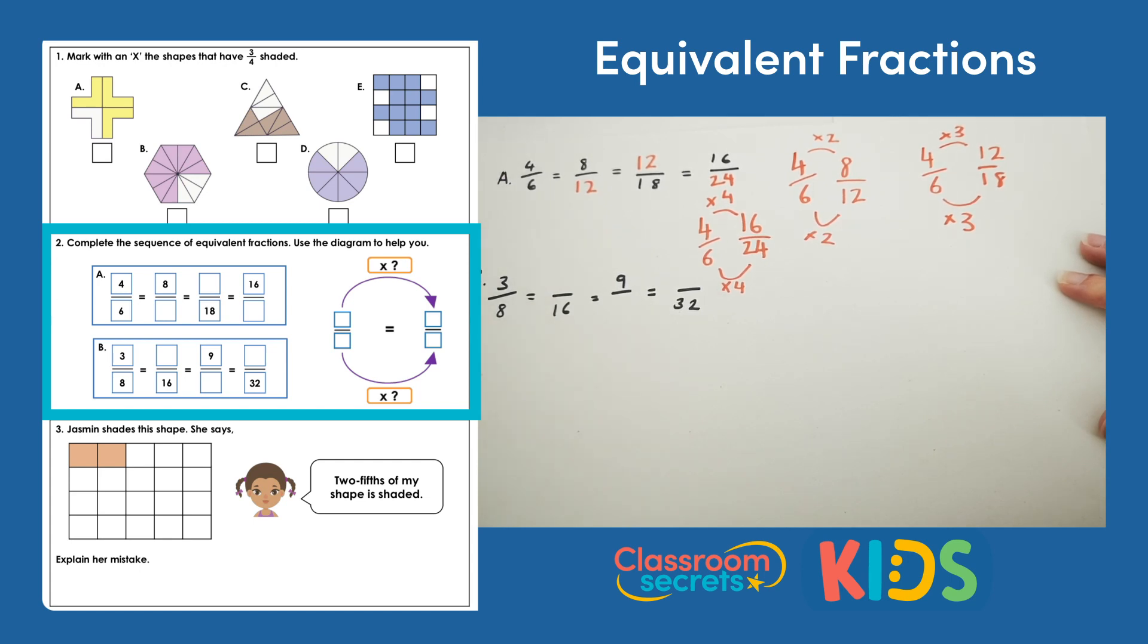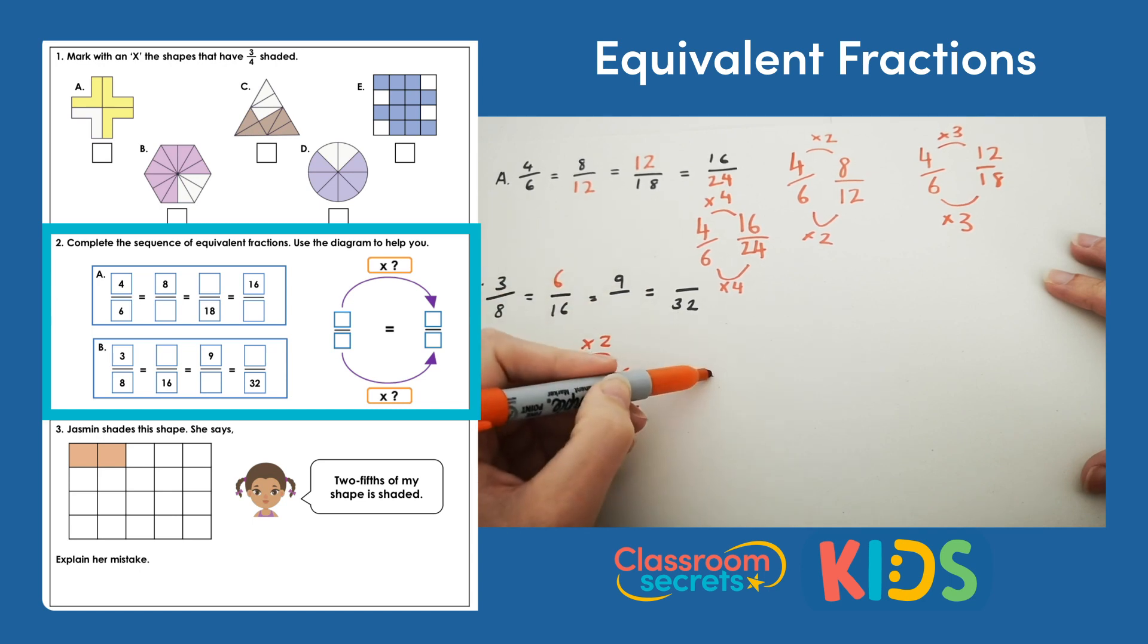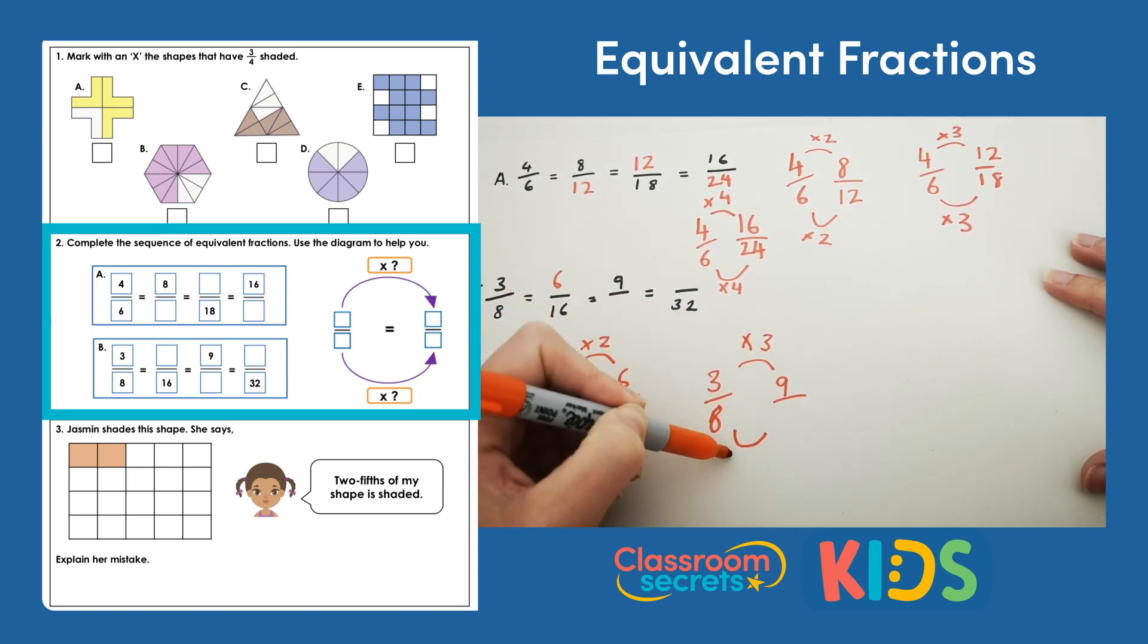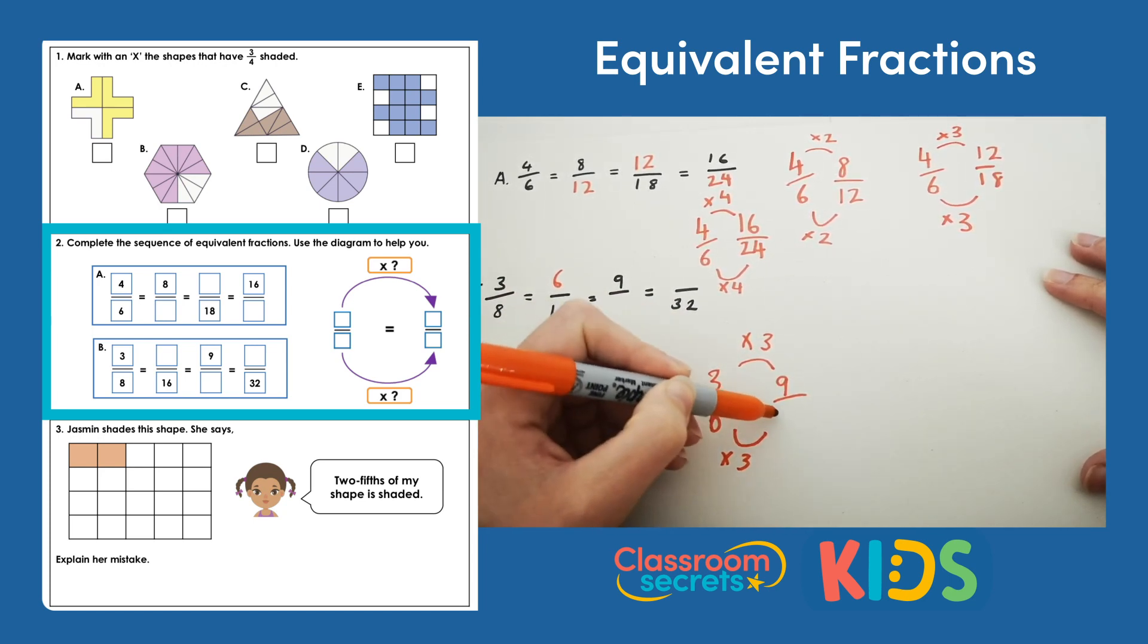So sequence B, if we do the same thing again, if we look at 3 eighths we think about how we make 8 into 16. To make 8 into 16 you multiply by 2. So we must multiply 3 by 2 which gives us 6. So we must multiply 8 by 3 which is 24.